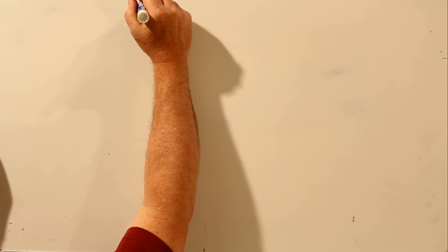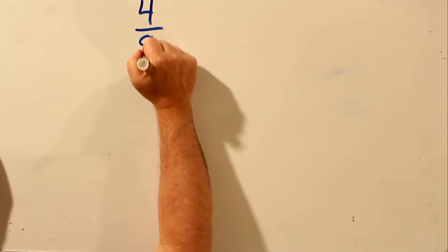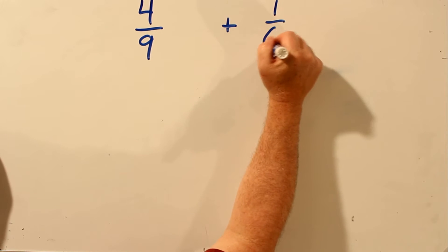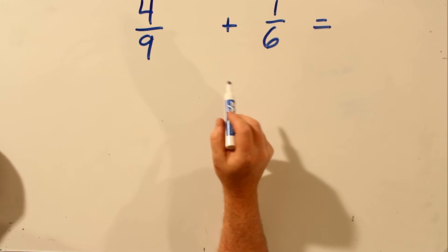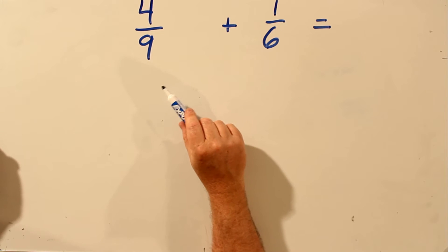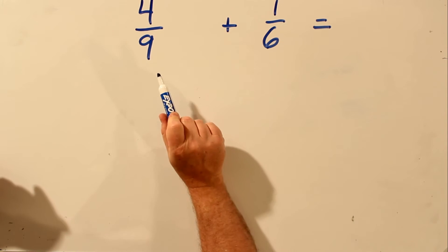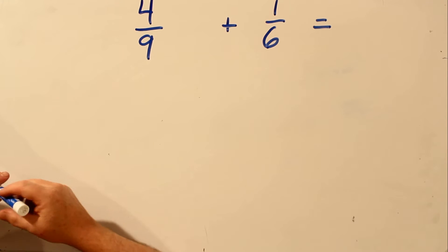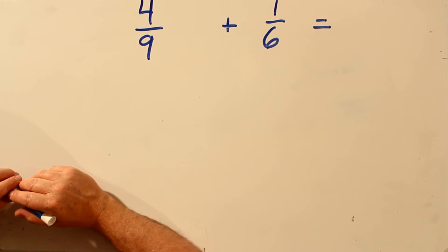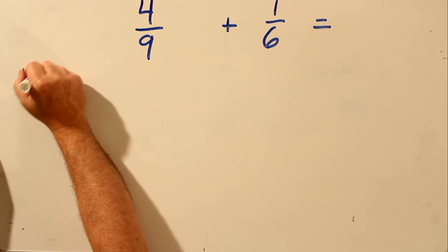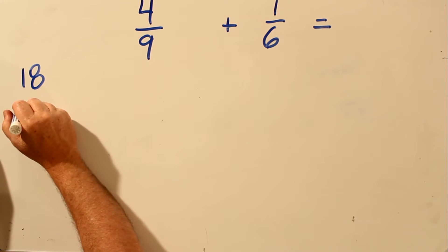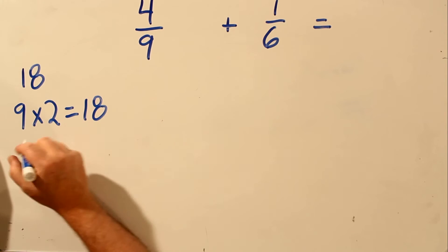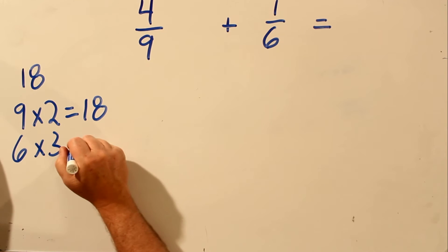Let's try another example. Let's add 4 ninths and 1 sixth. In order to add these two fractions, the bottom number has to be the same. In order to make the bottom numbers the same, we first have to find the lowest common multiple. So we find the lowest common multiple of 9 and 6, and it's 18. In fact, 9 times 2 is 18, and 6 times 3 is 18.